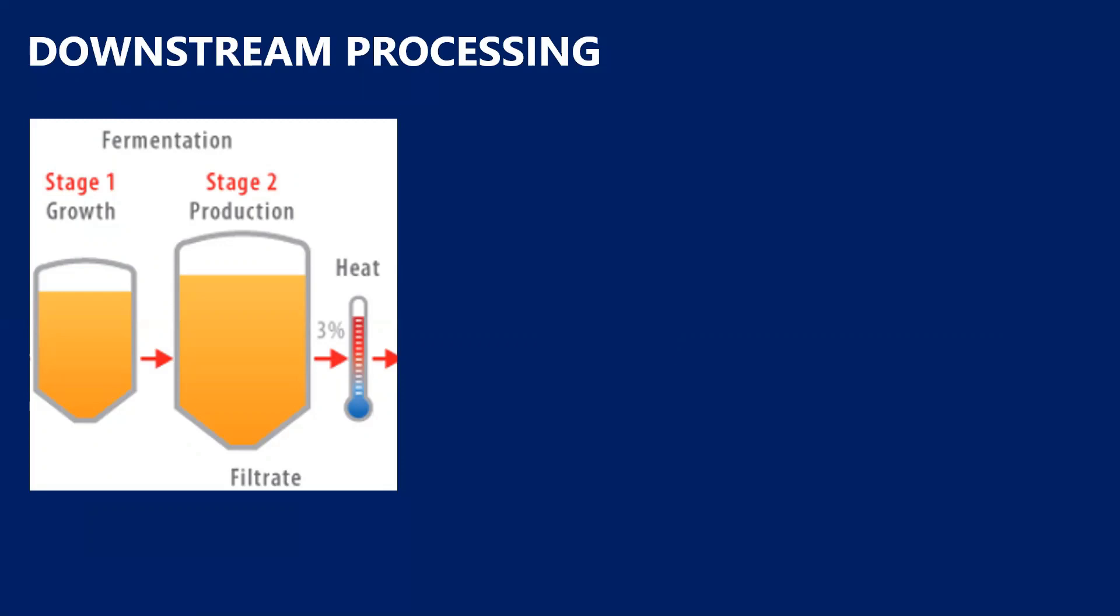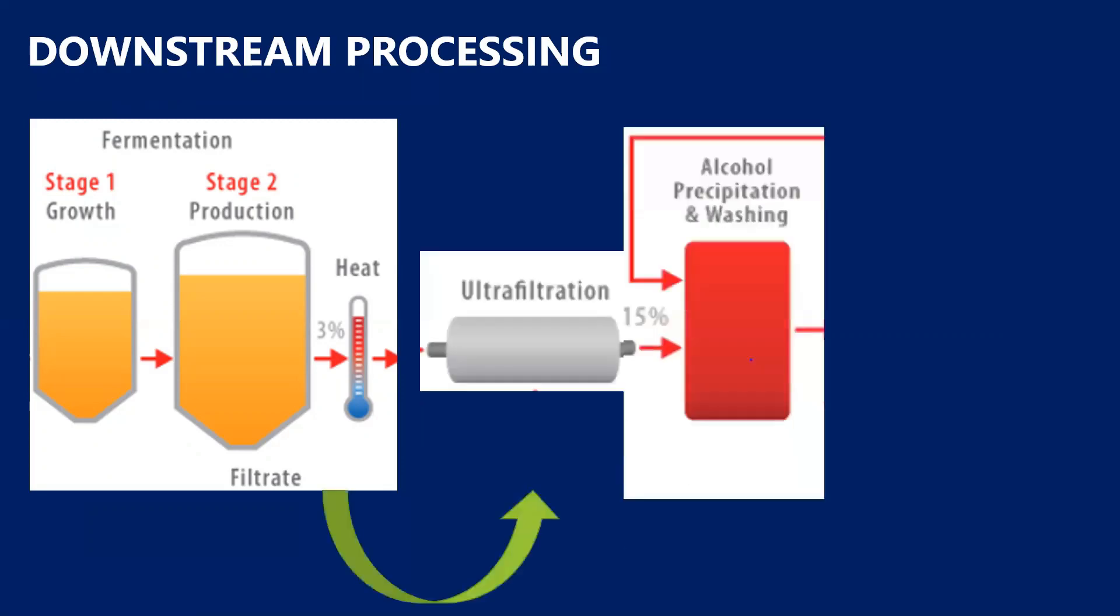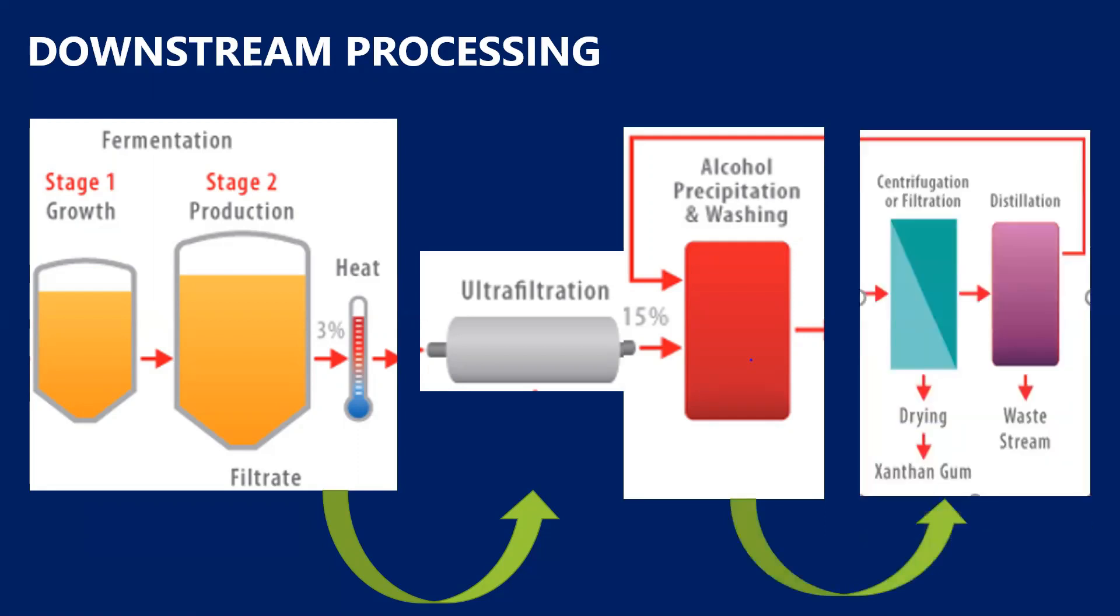Next, ultrafiltration is done. After ultrafiltration, the filtrate is subjected to alcohol precipitation. 95 percent ethanol is used for this precipitation step, followed by which it is washed. Then another step of precipitation and washing is carried out.